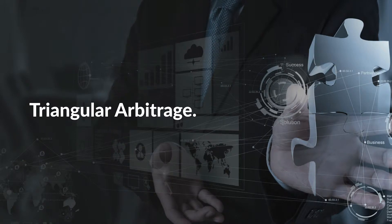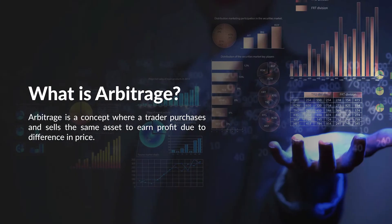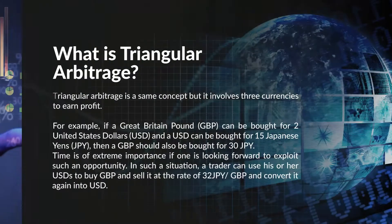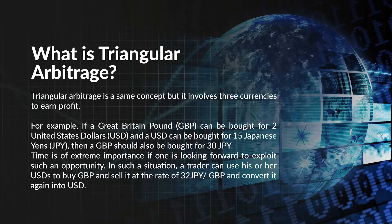Triangular Arbitrage: What is arbitrage? Arbitrage is a concept where a trader purchases and sells the same asset to earn profit due to a difference in price. Triangular arbitrage is the same concept, but it involves three currencies to earn profit.